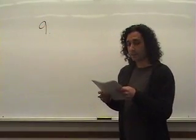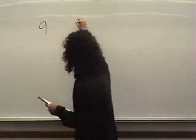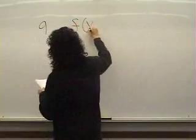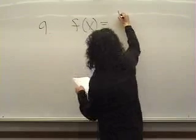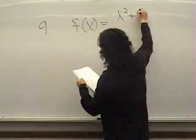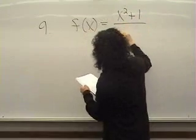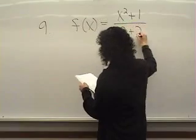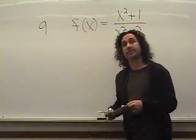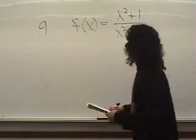Problem 9. We're told that f of x is equal to x squared plus 1 over x squared plus 2. And the question is, what's f of minus 1?